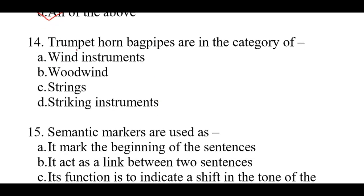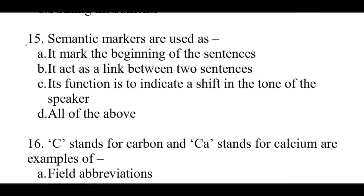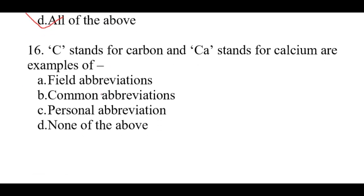Question number 14: Trumpet, horn, bagpipes are in the category of. The right option is A: Wind instruments. Question number 15: Semantic markers are used as. The right option is D: All of the above — it marks the beginning of sentences, it acts as a link between two sentences, and its function is to indicate a shift in the tone of the speaker.